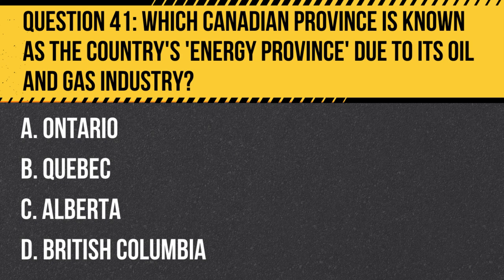Answer: C. Alberta. Alberta is known as Canada's energy province because of its substantial oil sands and conventional oil and gas reserves.